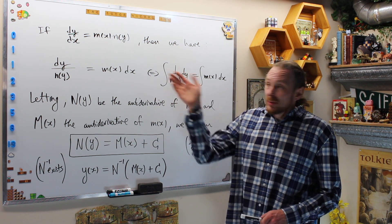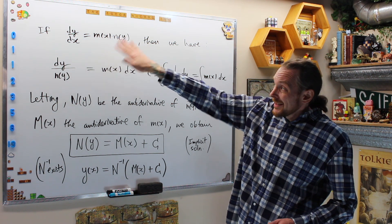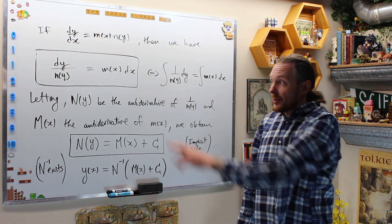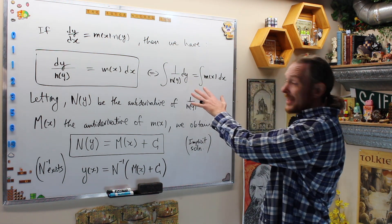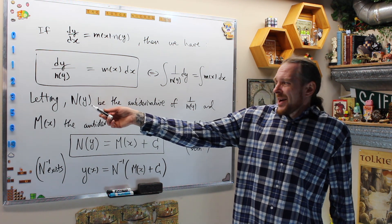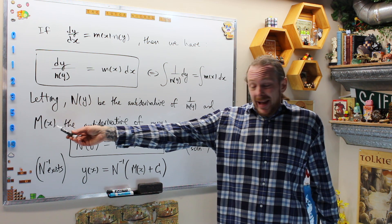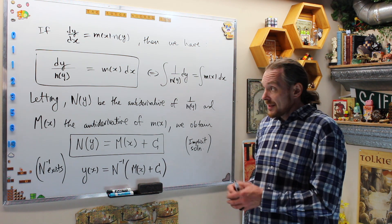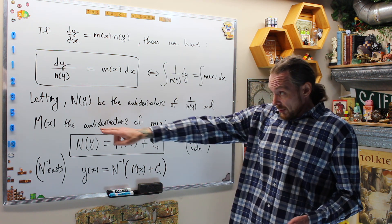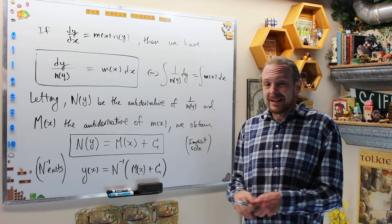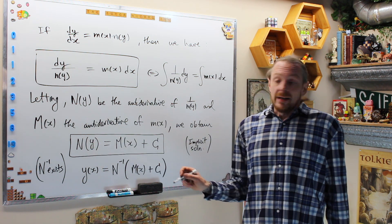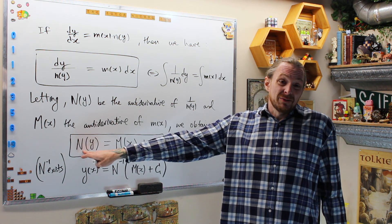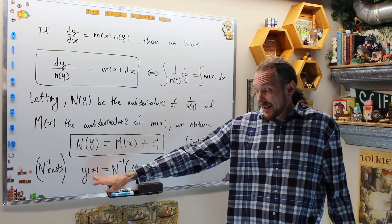Given a separable differential equation, this is why it gets its name. We use the equal sign to separate the y-dependent variable and the independent x variable, then integrate both sides. If we let big N(y) be the antiderivative of 1/n(y), and big M(x) be the antiderivative of m(x) — in one of your calculus classes you had to do techniques of integration; now you'll see why we want this as an application — we can solve differential equations. We want big M(x) to be the antiderivative of m(x). If we do this, we obtain what we call the implicit solution.